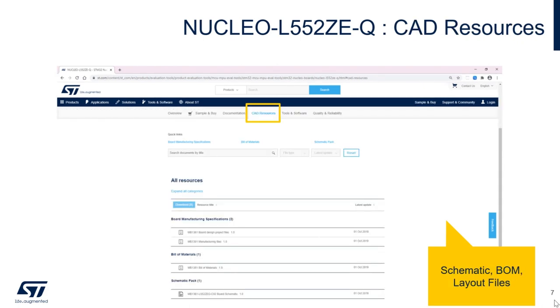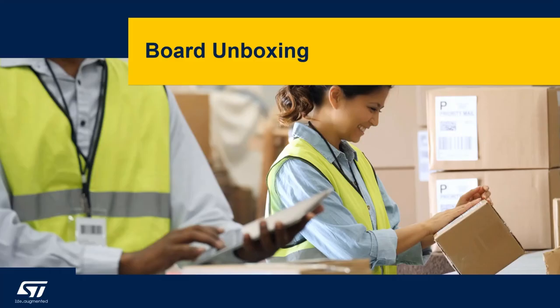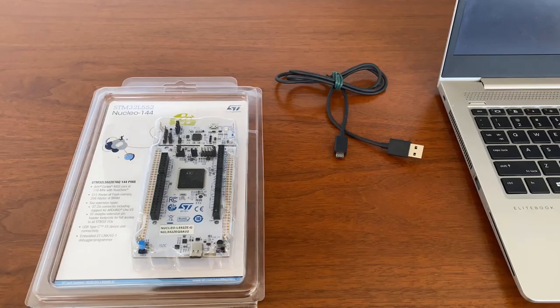Under the CAD resources tab, you will find a collection of layout files, the board's schematic, and the board's bill of materials file. Now that we've covered the documentation portion of this presentation, let's proceed onward to what you can expect when you receive your Nucleo board.